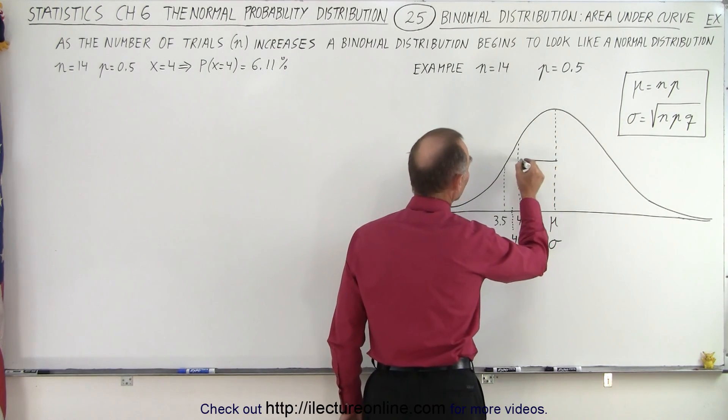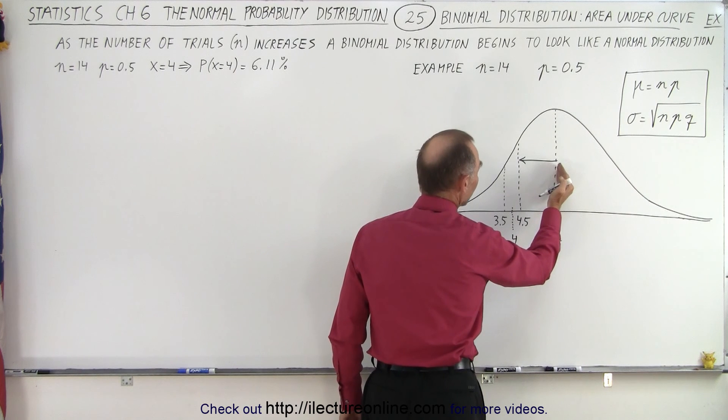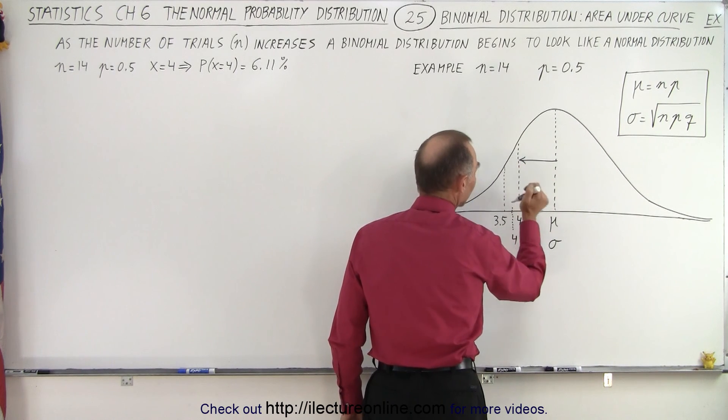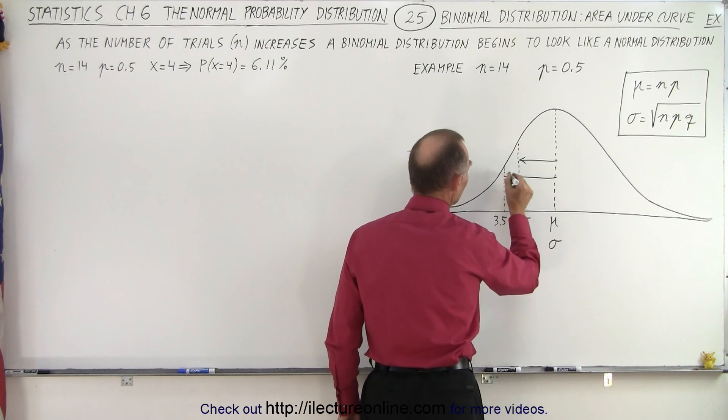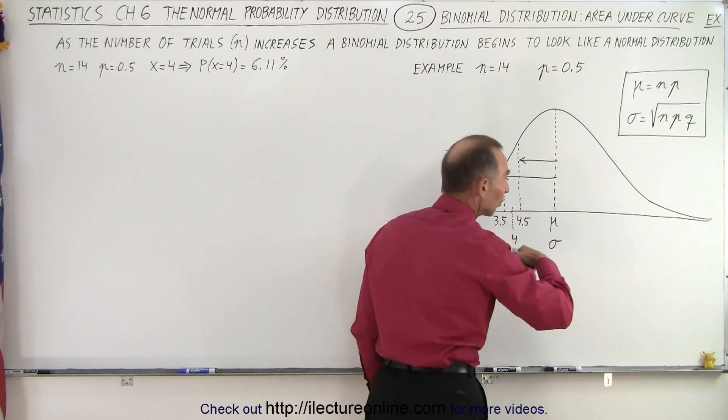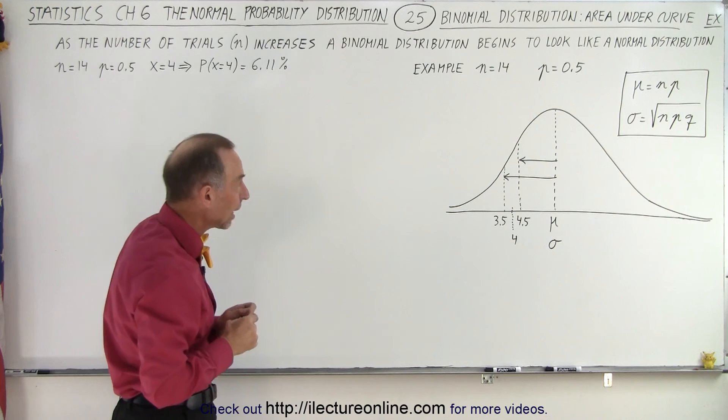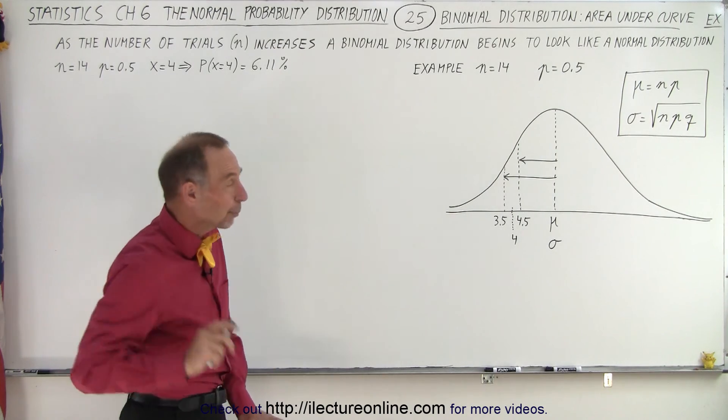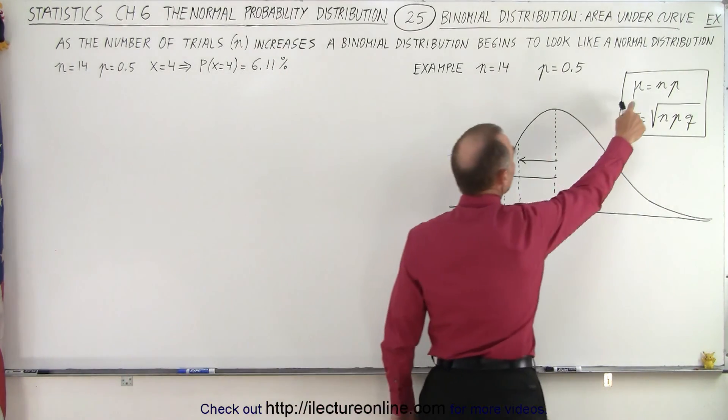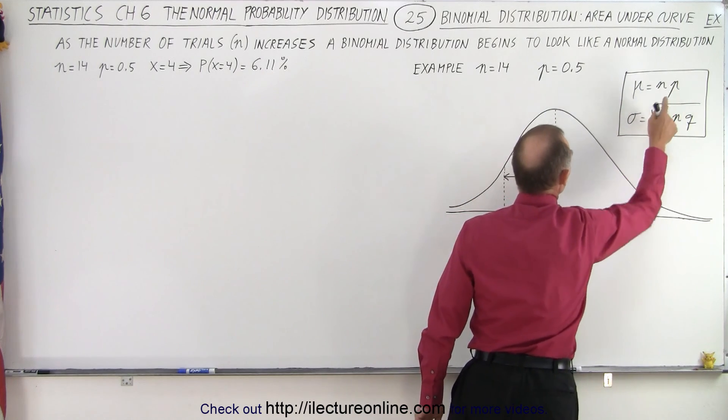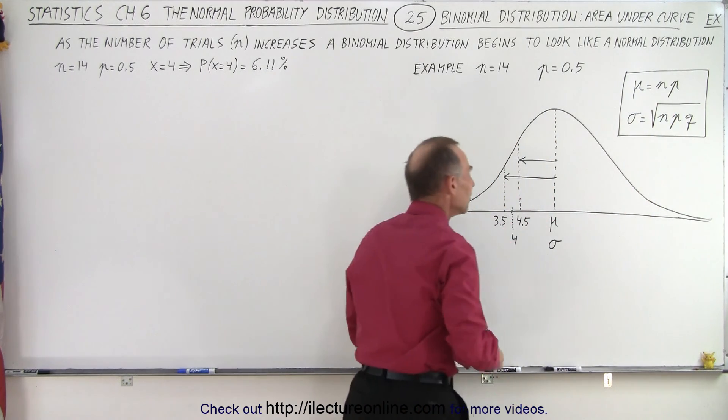Now what we need to find is the z value from the mean to the first boundary and the z value from the mean to the second boundary, because it's with the z value and the table that we can then find the area underneath the curve. But first before we do that we need to find the mean, which can be found by n times p, and the standard deviation.